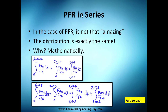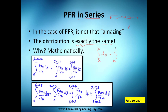Let's continue now with the PFR in series. This is not as impressive as the CSTR — we're going to see that it's kind of boring in this case. The distribution is exactly the same, so whether you have one or two reactors, you will always add up to the same total volume. This comes from the integral property: the integral from A to C equals the integral from A to B plus the integral from B to C.